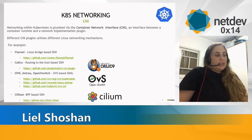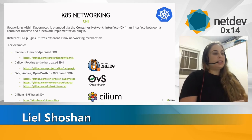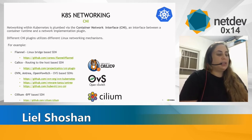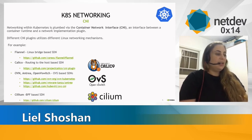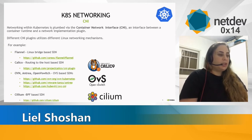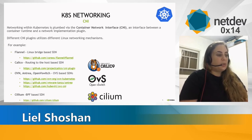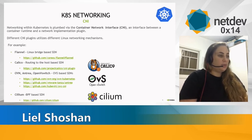Different CNI plugins utilize different Linux networking mechanisms. For example, Flannel, which is a Linux bridge-based with VXLAN; Calico, which is a routing-to-the-host-based SDN. There are several OVS, OpenVSwitch-based ones, among them OVN, Antrea, and OpenVSwitch, and Cilium as an example for BPF-based ones.